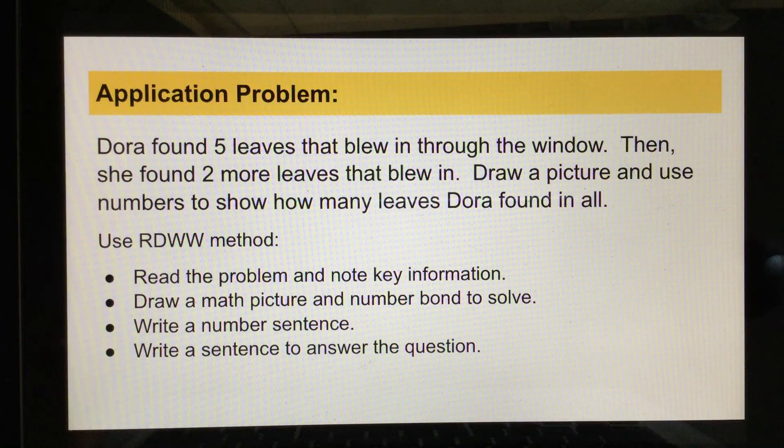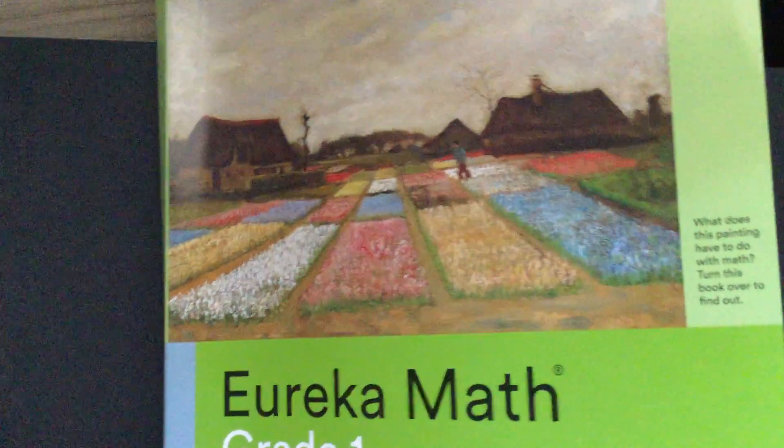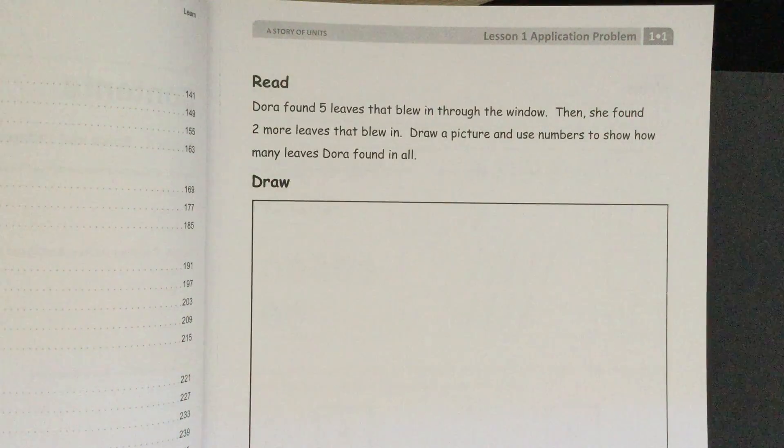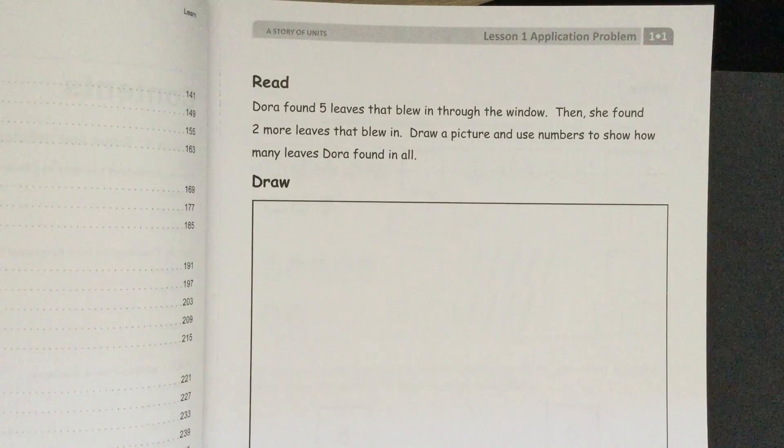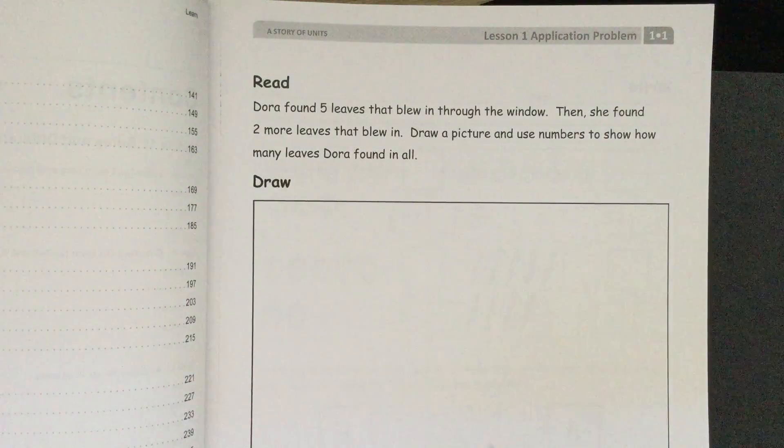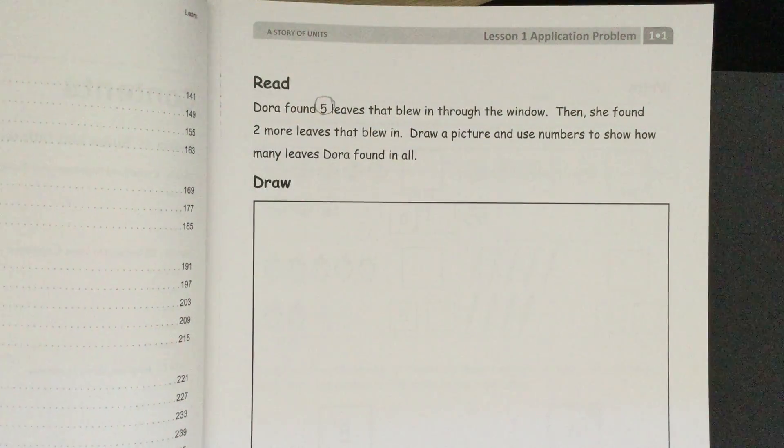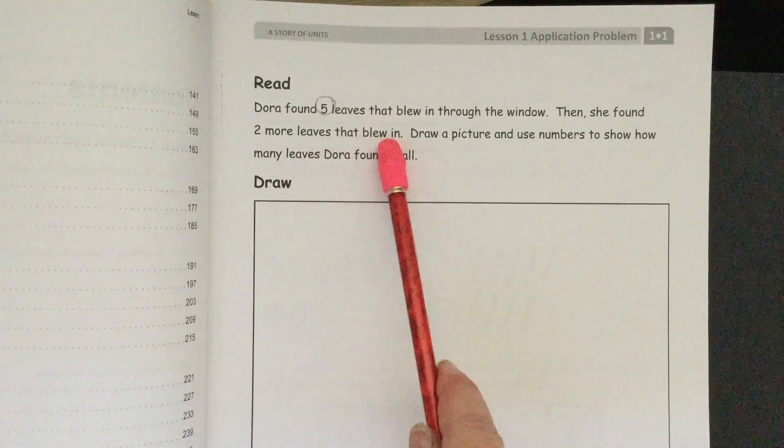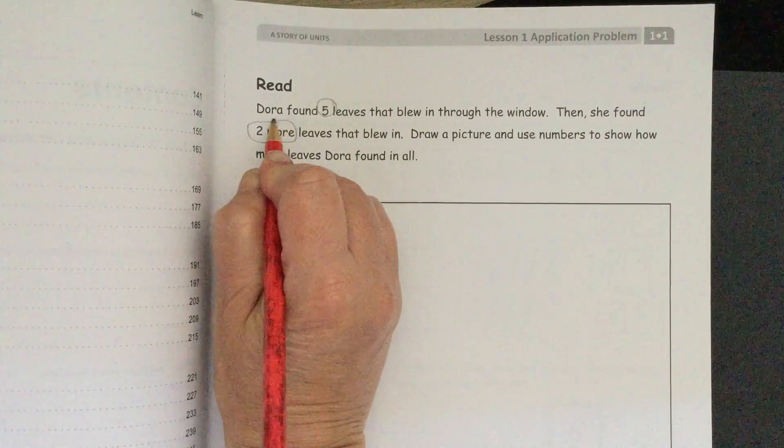We're going to head over to our math book now. We're using this Eureka Math book, Grade 1, Module 1. Here is our same application problem. We'll read it again and make sure that we note our key information. Dora found 5 leaves that blew in through the window. I'm going to circle that 5 because that is important information for us to remember. Then she found 2 more leaves that blew in. I'll circle that.